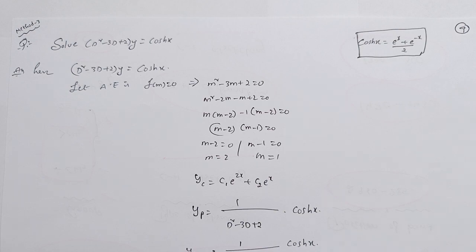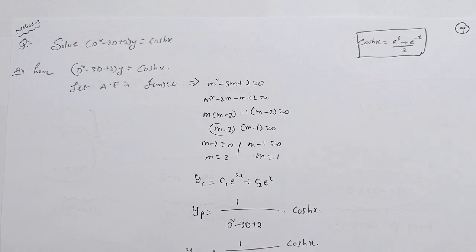Let's take Method 3. If you observe this, Method 3 is the method where f(D)y is equal to cos 3x, cos 4x, sin 3x, sin 4x — that's the same pattern.